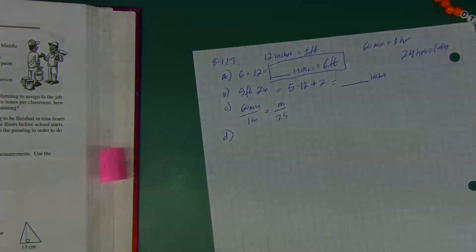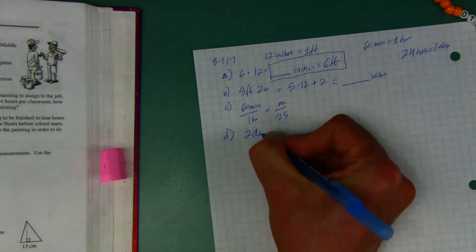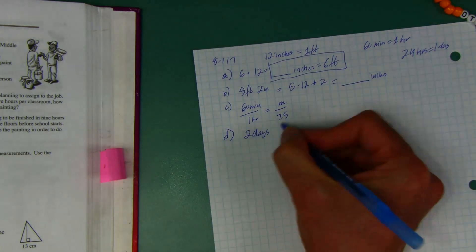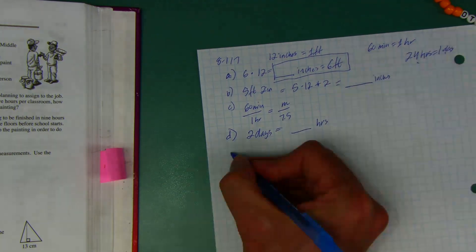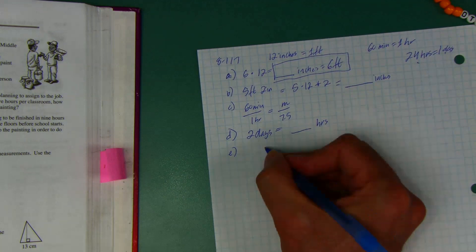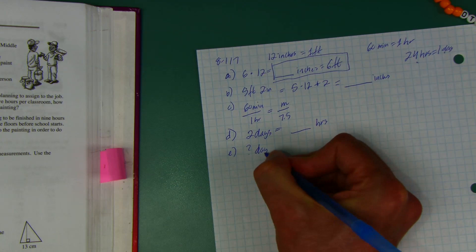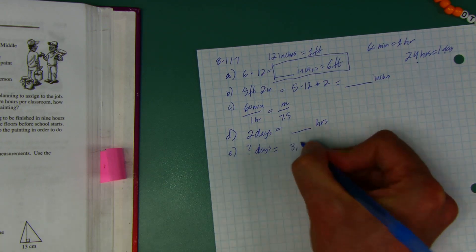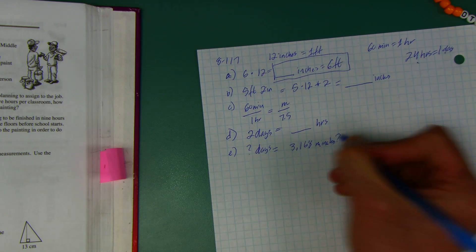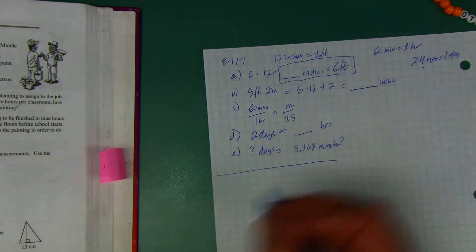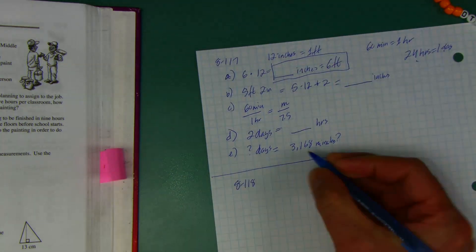Part d: how many hours are in two days? Set up your ratio and proportion if you want. Last one: how many days are in three thousand one hundred and sixty-eight minutes? There's some math in that one — see if you can figure it out.